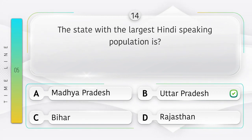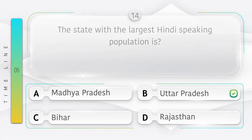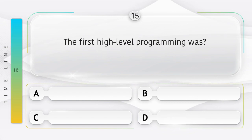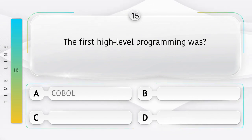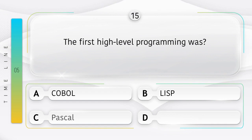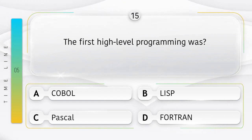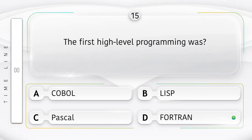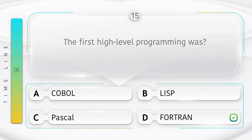The first high-level programming language was: option A: COBOL, B: LISP, C: Pascal, D: Fortran. Answer is option D, Fortran.